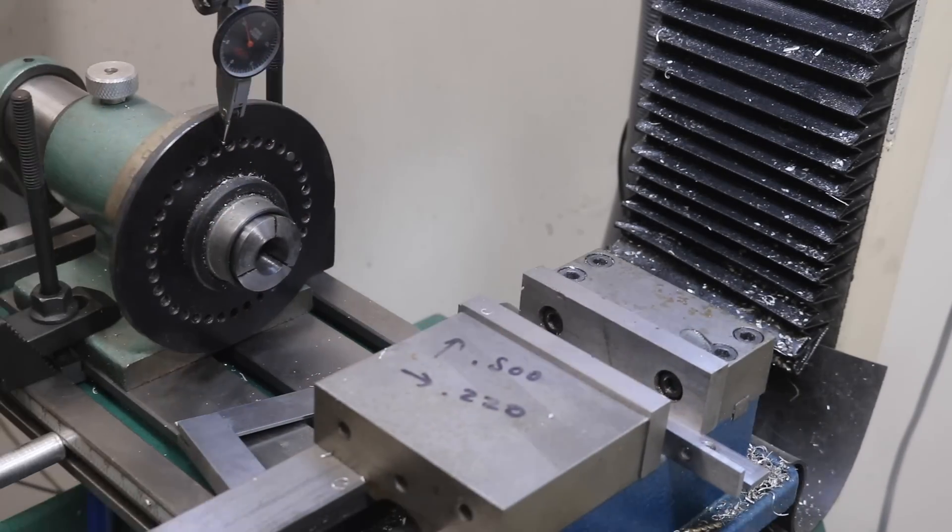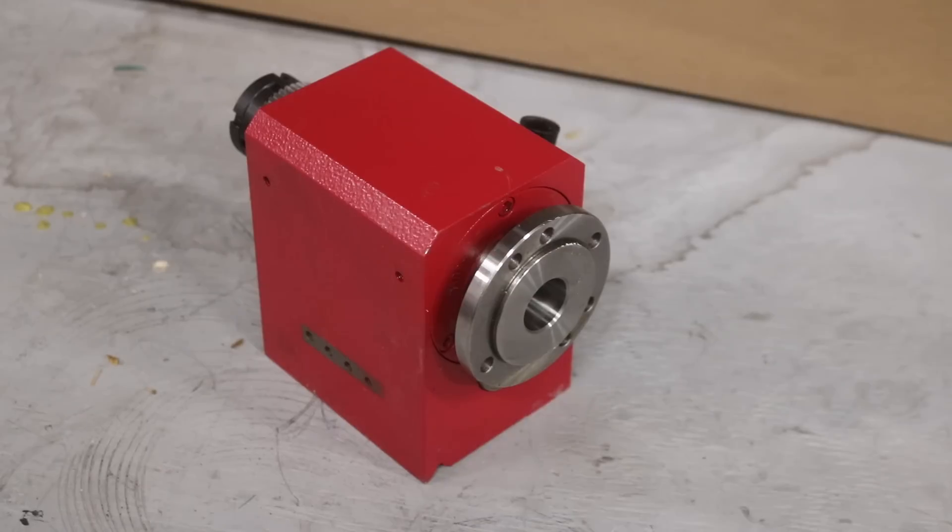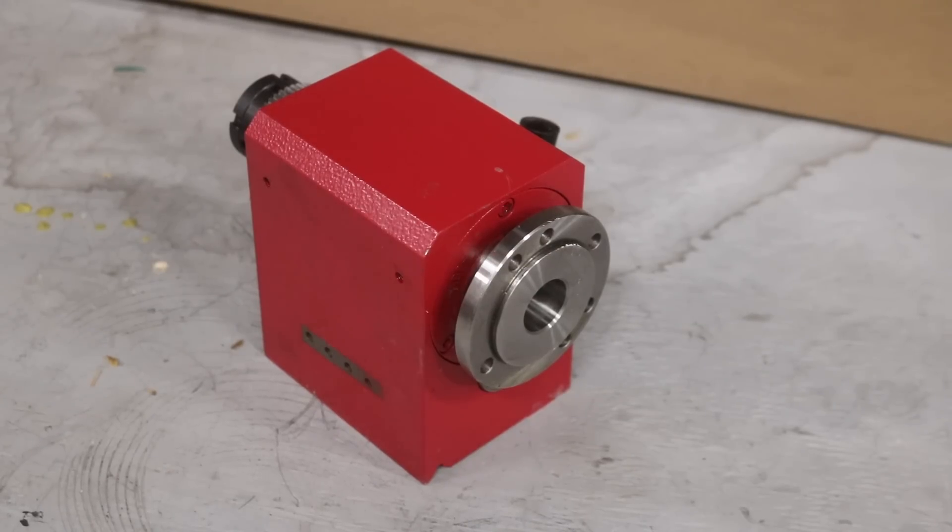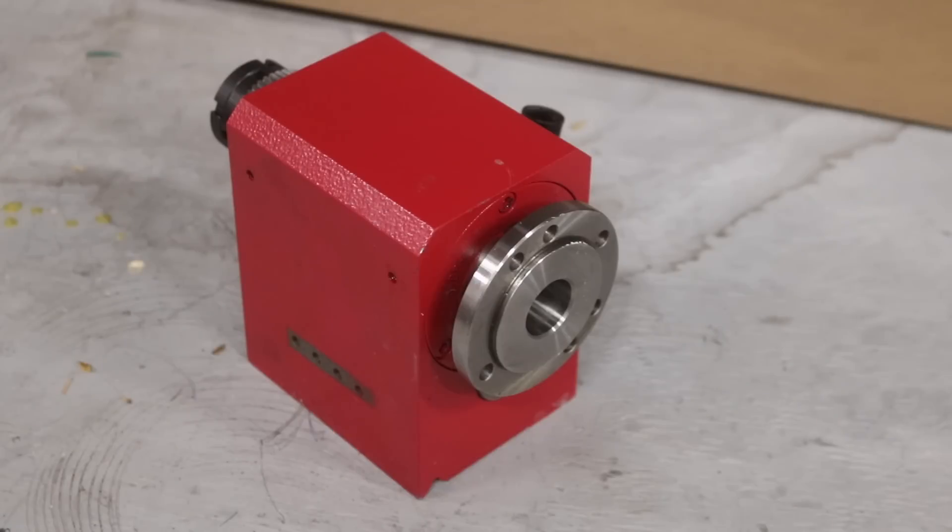But you know, I have a hard time leaving well enough alone, so I got this little guy. Yep, that's the headstock to a mini lathe. I've got this cockamamie idea that I can automate it and turn it into a fourth axis.